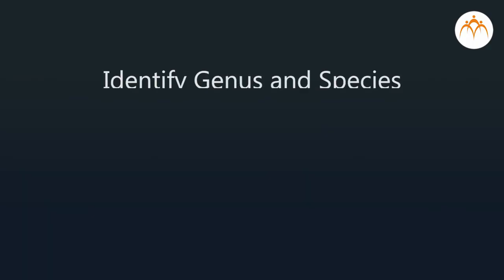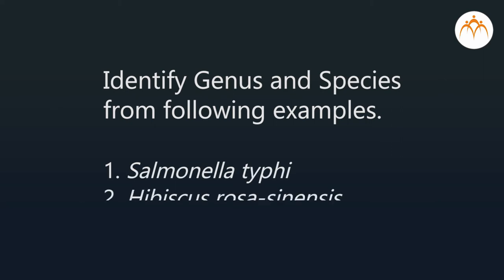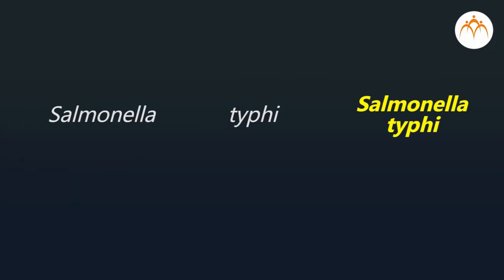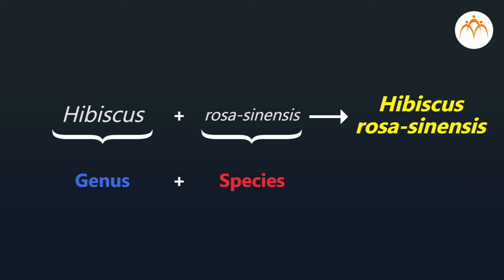There is a small exercise for you. Identify the genus and species from the following examples. First: Salmonella typhi. Second: Hibiscus rosasinensis. Now verify your answers. In Salmonella typhi, the genus is Salmonella and the species is typhi. In Hibiscus rosasinensis, the genus is Hibiscus and the species is rosasinensis.